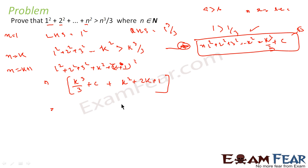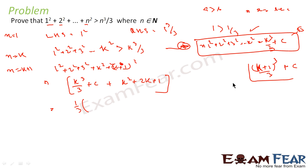Expanding (k plus 1) squared gives k squared plus 2k plus 1. Now we'll take 1 by 3 common, because we need to form this in the shape of (k plus 1) cubed by 3. So we have to prove that this expression equals (k plus 1)³ by 3 plus some constant.